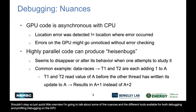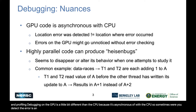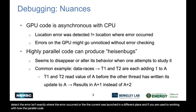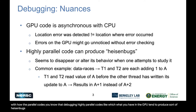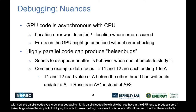Debugging on the GPU is a little bit different than the CPU because it's asynchronous with the CPU, so sometimes where you detect the error isn't exactly where the error occurred, or the kernel was launched in a different place. And if you are used to working with highly parallel codes, you know that debugging highly parallel codes like what you have in the GPU tend to produce heisenbugs where the simple act of trying to study the bug makes it disappear. This is quite a difficult problem, but there are tools available to sort of solve these things.